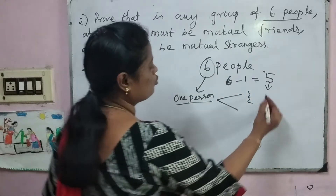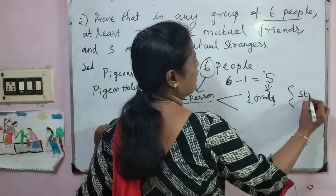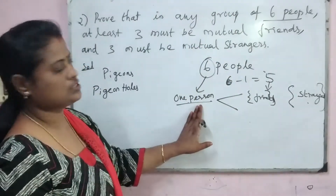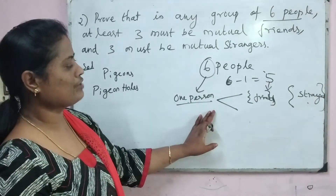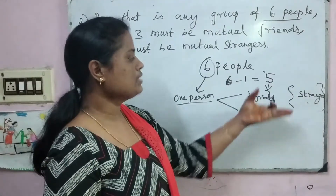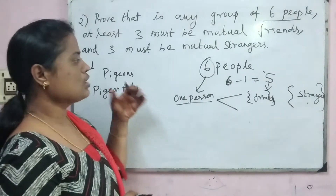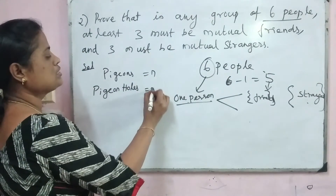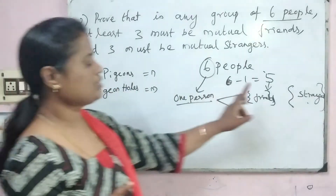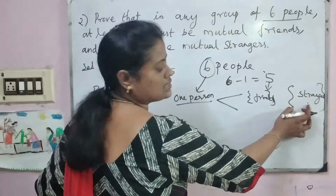So we have 2 sets — 1 set is friends for that person, and the other set is strangers for that concerned person. Now identify which is the pigeon and which is the pigeonhole. Pigeons are denoted by N and holes by M. Remember N is always greater than M. Here N equals 5 people, and those 5 people have 2 sets — one set of friends and one set of strangers — so the pigeonhole M equals 2.